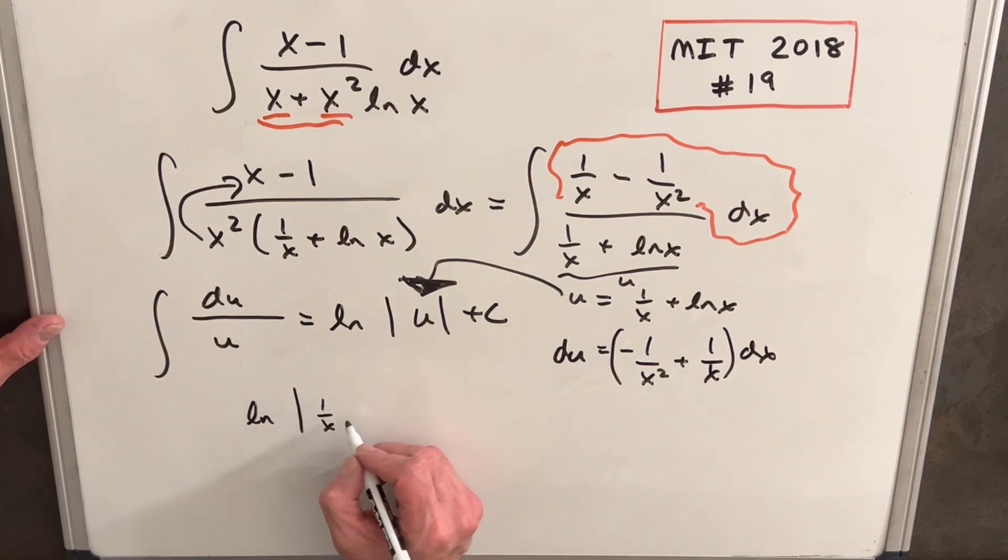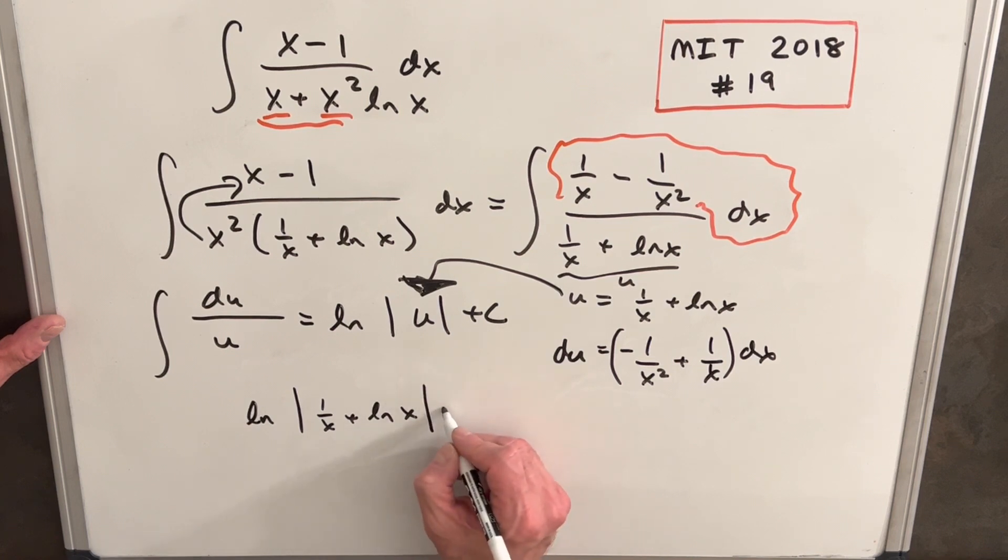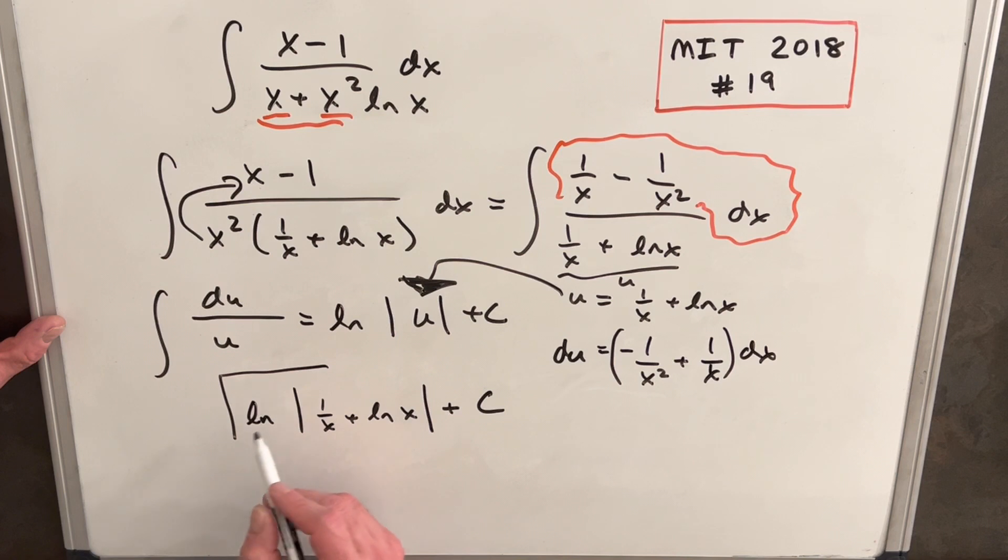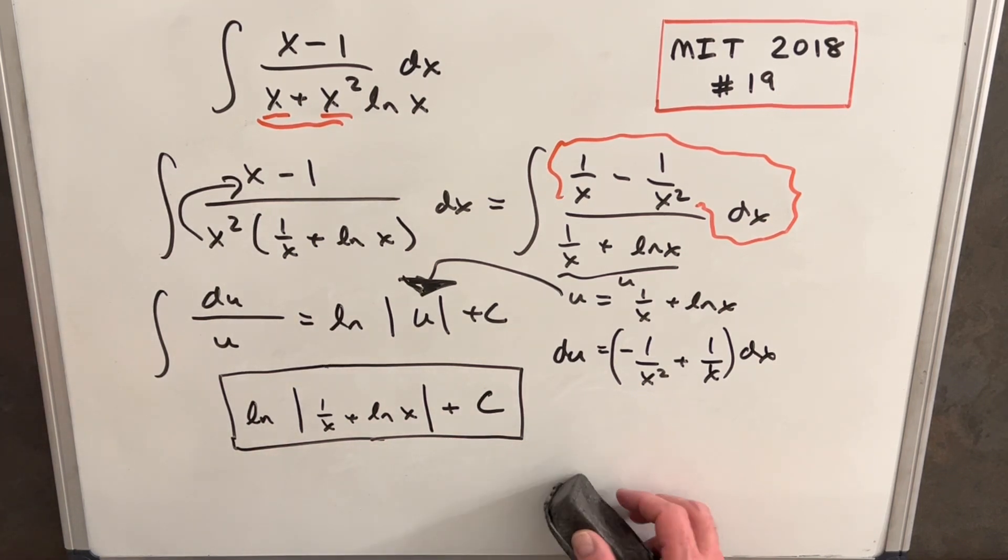For our final answer we're going to have natural log—absolute value is not required in the MIT B. They don't require absolute value and they don't require plus C because I think you have to do it for speed. There's a 20-minute time limit on this, so they don't have you do any extra things, but we'll include it. So that's MIT Integration B 2018 problem number 19.